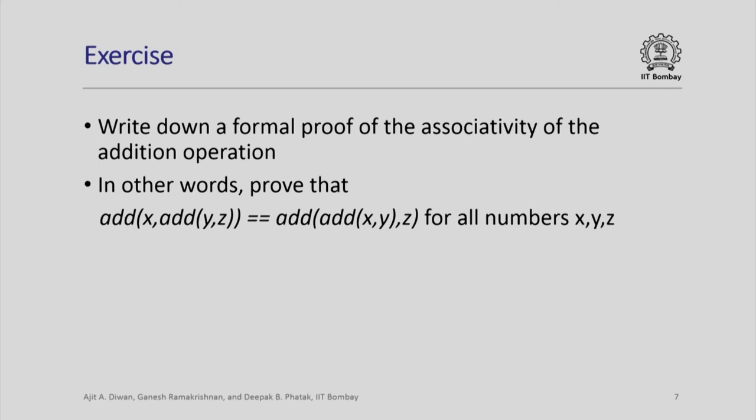Here is another property of the addition operation, called associativity. This says add(x, add(y, z)) equals add(add(x, y), z) — informally, x+(y+z) = (x+y)+z. The left-hand side adds y to z and then adds x to it; the right-hand side adds x to y first and then adds z. The result should be the same no matter how you group them. This is again a property that can be proved formally in exactly the same way, just going by the definition of the addition operation. We try to keep our definitions as simple as possible, then prove more and more properties that can be exploited when we write programs. We will look at some more properties of numbers in the next session.